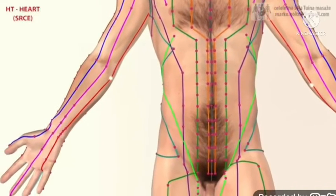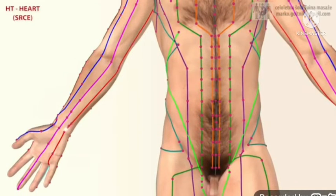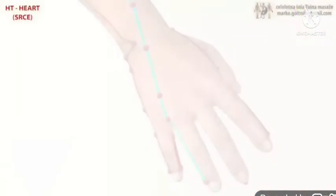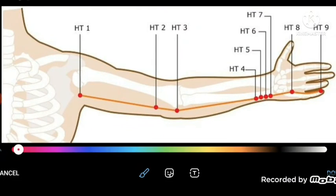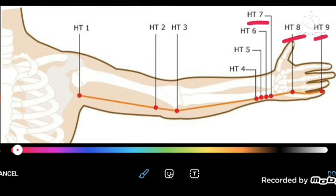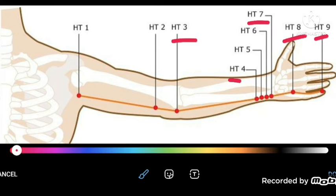It has total nine points. We are going to see the nine points now. HT9 is the wood point, HT8 is the fire point, HT7 is the earth point, HT4 is the metal point, and HT3 is the water point in the heart meridian.